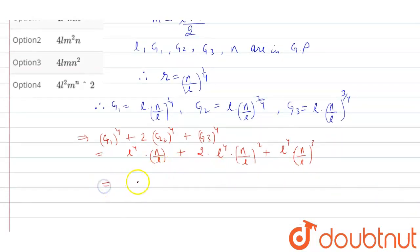Now, we can write this as l cube n plus 2 l square n square plus l into n cube. So now, we can take n into l common.